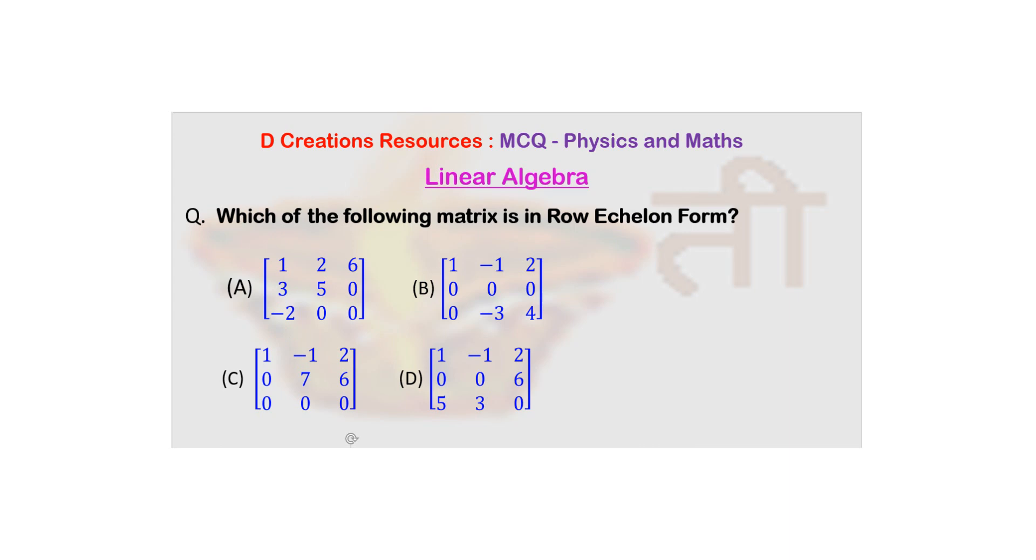Also, you can see here that in option D, there is a non-zero entry here. So this is also ruled out. And even if you say it's the leading entry of row three, it has to be to the right, instead it is to the left. So option D is also ruled out.